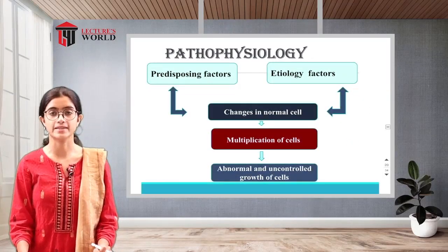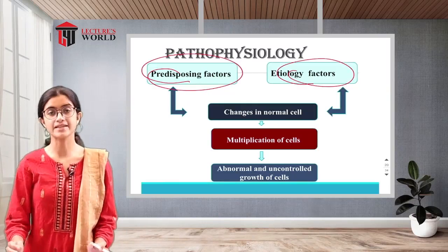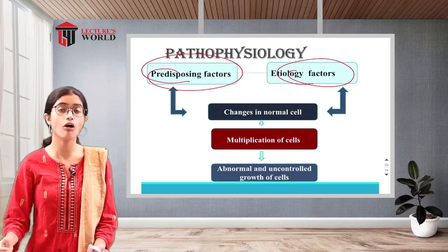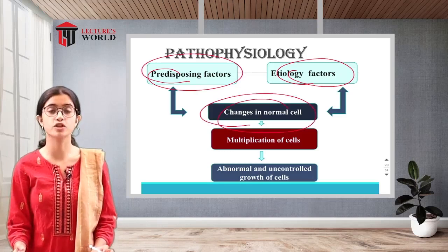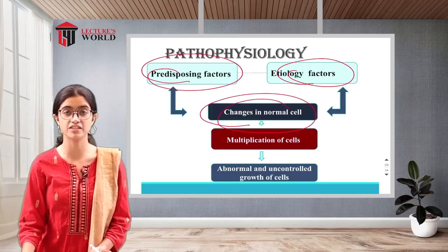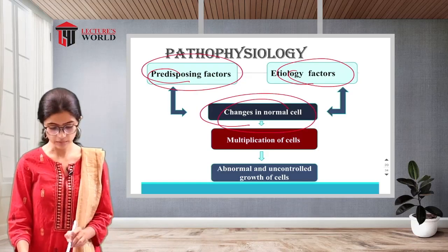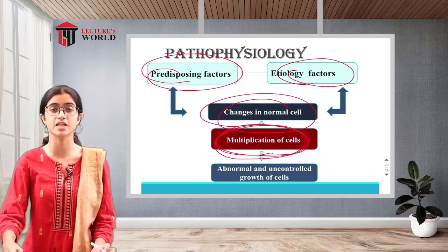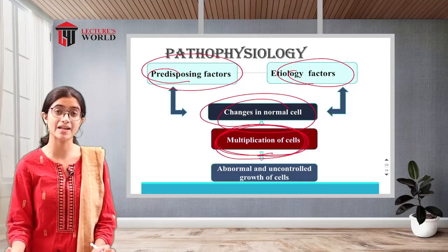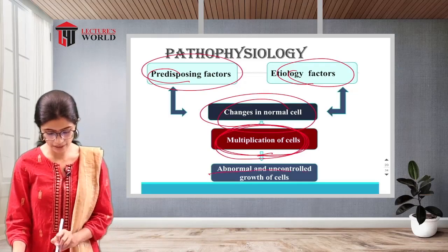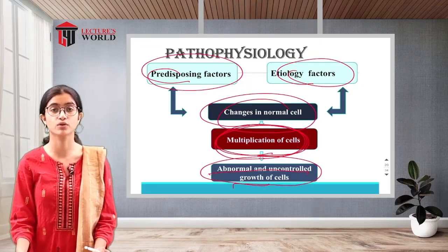The pathophysiology of breast cancer: predisposing etiological factors — whether modifiable or non-modifiable risk factors — cause changes in normal cells. Because of exposure to these risk factors, changes occur within the normal cells of the patient, causing the cells to multiply abnormally, resulting in uncontrolled growth.